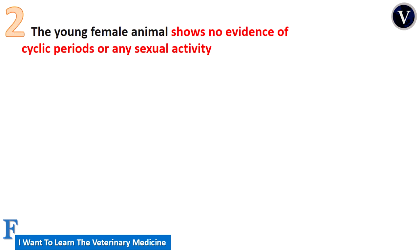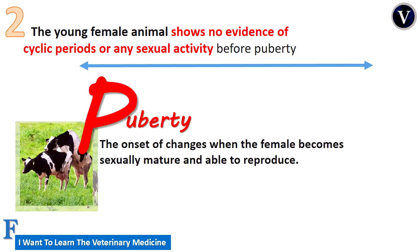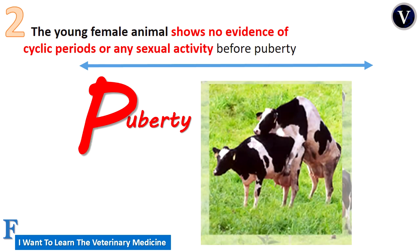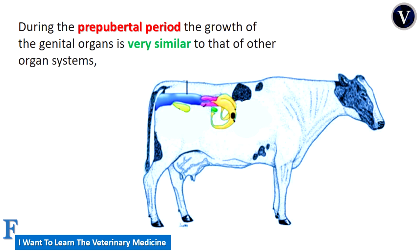The young female animal shows no evidence of any sexual activity before puberty. If you observe the behavior of the young female or a heifer, you will find that there is no evidence of any sexual activity or cyclic periods before puberty. The definition of puberty is the change when the female becomes sexually mature and able to reproduce.